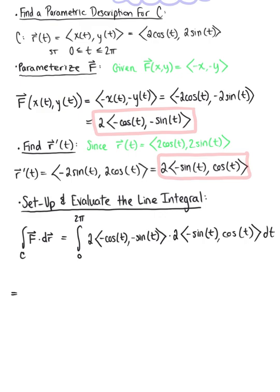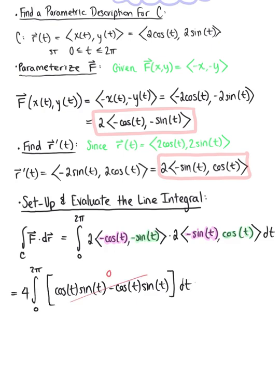Taking the product of the two scalar multiples gives 4 times the integral from 0 to 2π. Computing the dot product, we get −cos(t)·(−sin(t)) + (−sin(t))·cos(t), which simplifies to cos(t)sin(t) − cos(t)sin(t) = 0. So we have 4 times the integral from 0 to 2π of 0 dt, giving a final answer of 0.